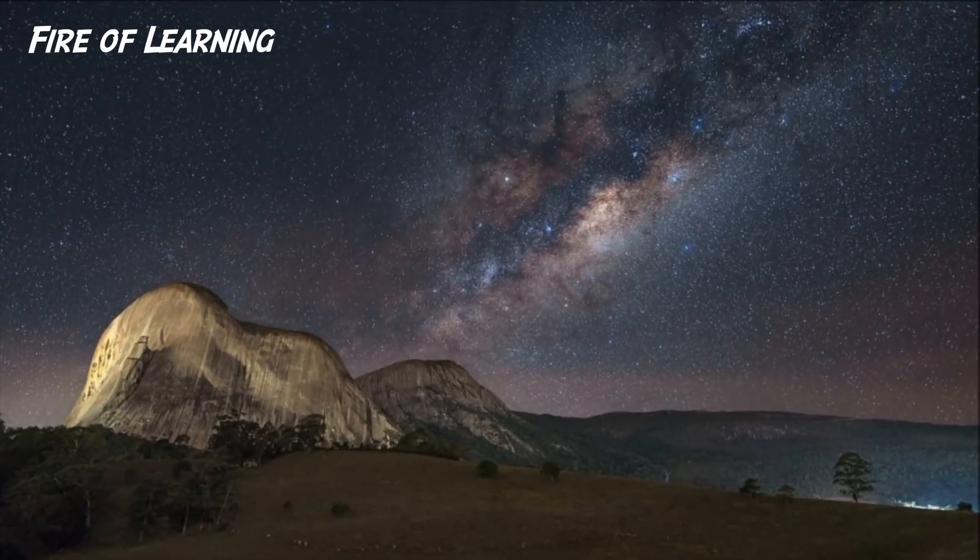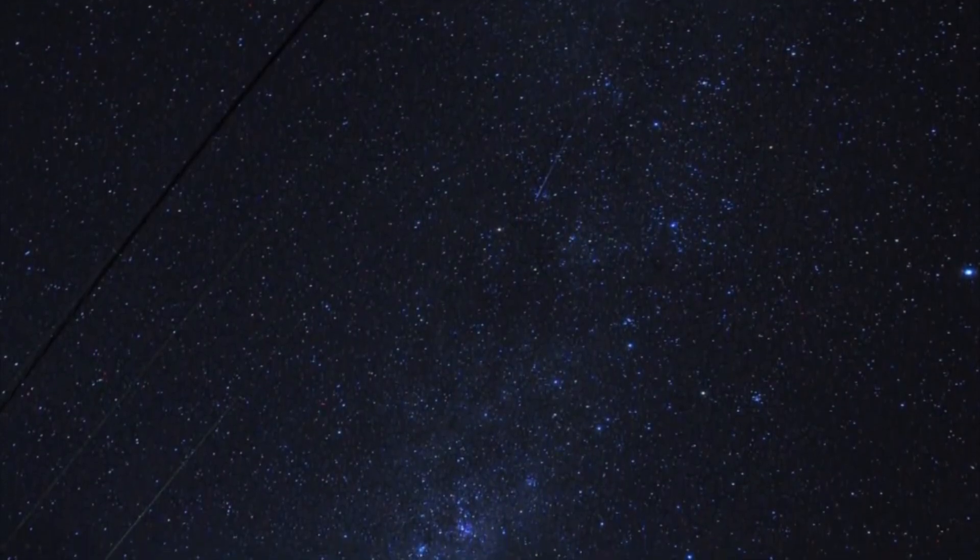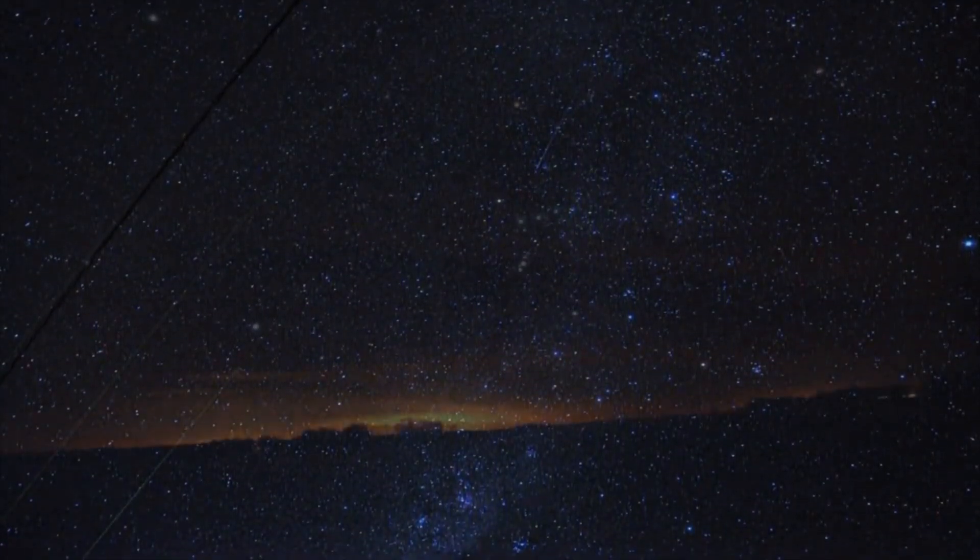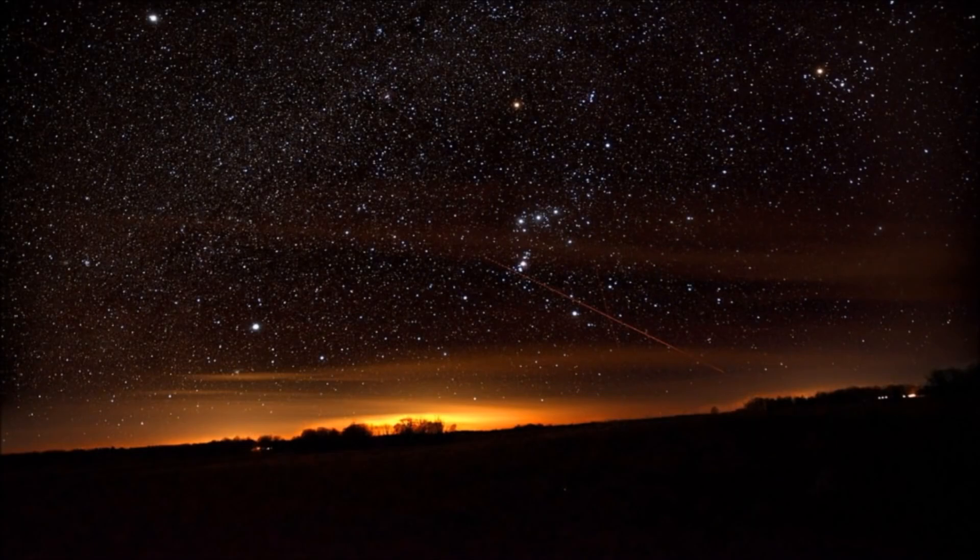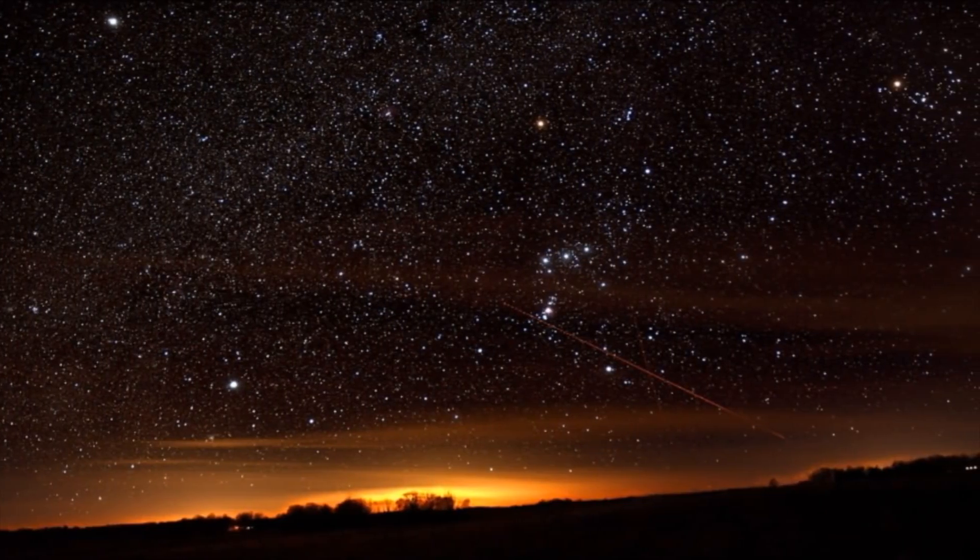Betelgeuse is a red supergiant star situated in the constellation of Orion, approximately 640 light-years away from Earth. It's one of the brightest stars visible to the naked eye and has captivated astronomers for centuries.